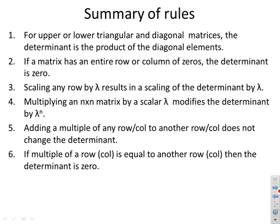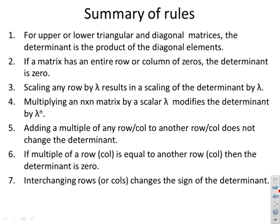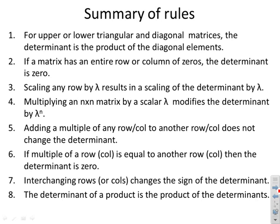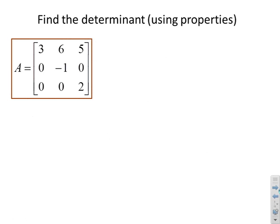If a multiple of a row or column is equal to another row or column, the determinant is zero. If you interchange rows or columns then it changes the sign of the determinant, and the determinant of a product is the product of the determinants. These are the rules we're going to use with these worked examples — the key thing is to pick the rules that will make the determinant computation most efficient.